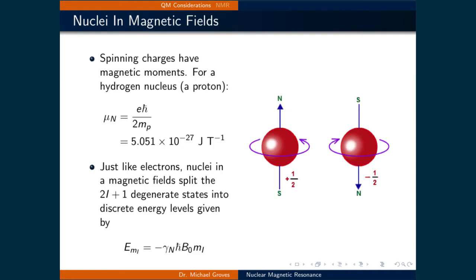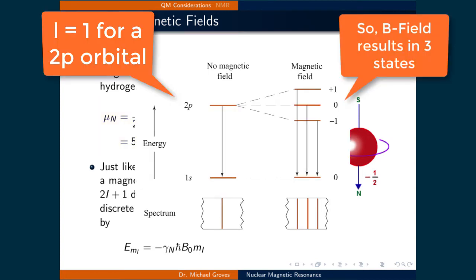Nuclei are spinning charges, and spinning charges have magnetic moments. For a hydrogen nucleus, which is composed of a single proton, that magnetic moment, being called mu sub n, is equal to the elementary charge E times h bar divided by 2 times the mass of the proton, which is equal to 5.051 times 10 to the minus 27 joules per tesla.